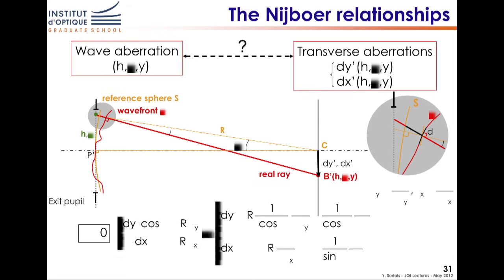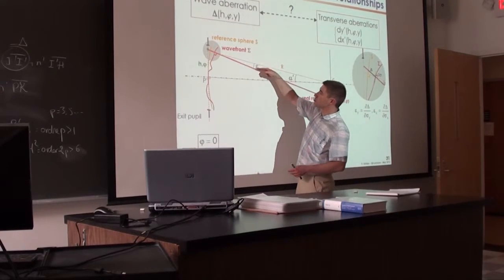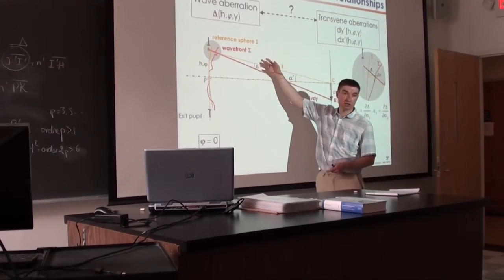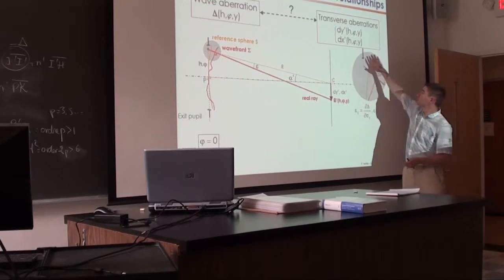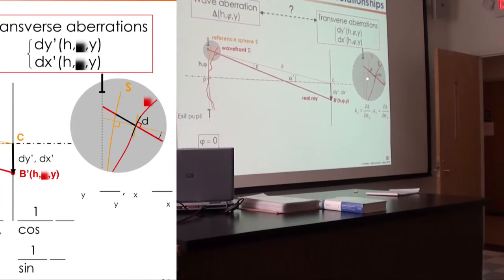I'm going to convey some intuition about where the formulas come from. Consider the small angle epsilon here between the paraxial ray and the real ray. In 3D, epsilon has components epsilon_y in this plane and epsilon_x in the other plane. If you zoom in and think about this figure, it's rather intuitive: epsilon_y is equal to the derivative of delta with respect to a small displacement on the wavefront, d sigma.